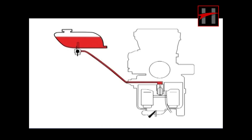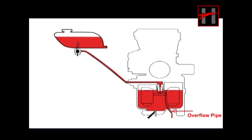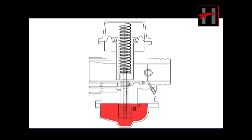As the fuel level in the float chamber increases, it lifts the float, which starts compressing the spring-loaded pin of the needle valve. After the spring is fully compressed, it closes the passage for fuel intake. If for any reason the fuel level rises further, fuel will come out from the overflow pipe. A drain screw is provided to remove dirty fuel from the chamber.